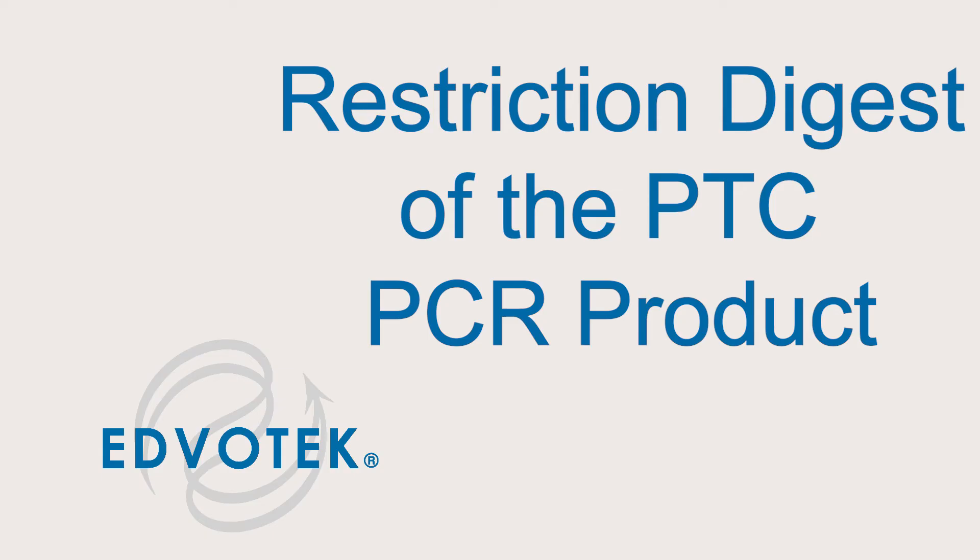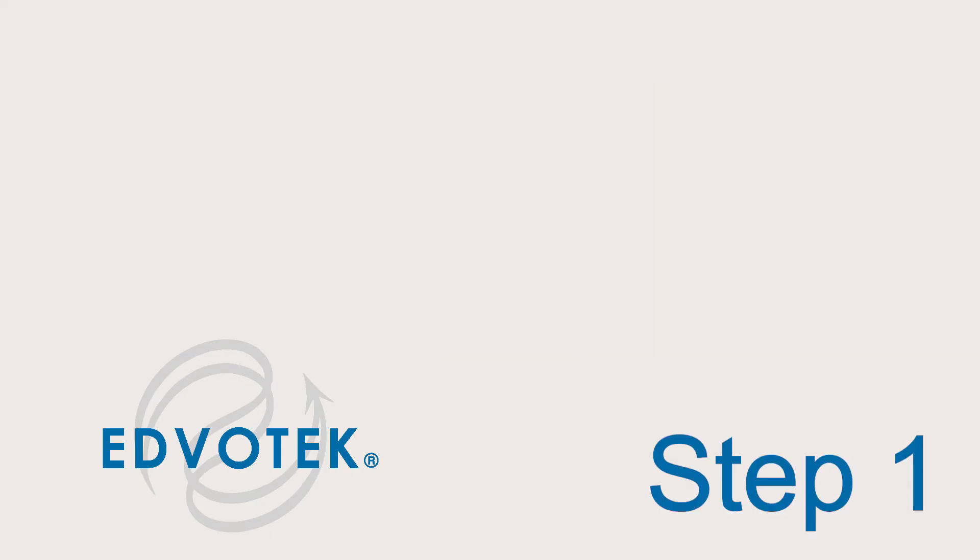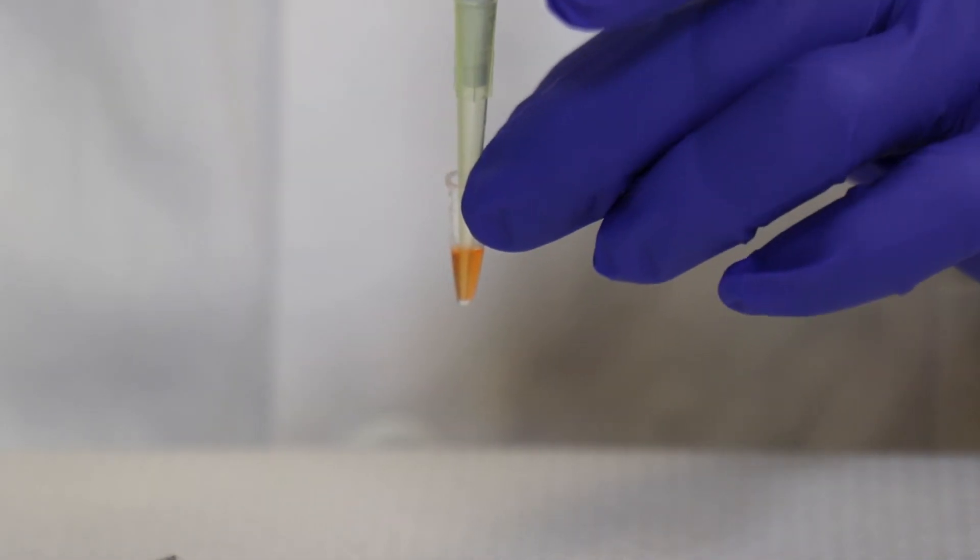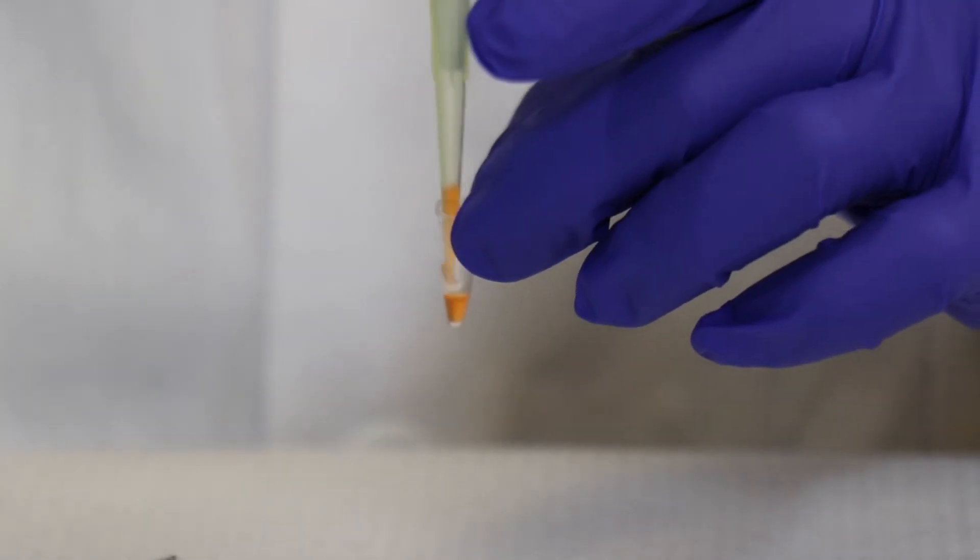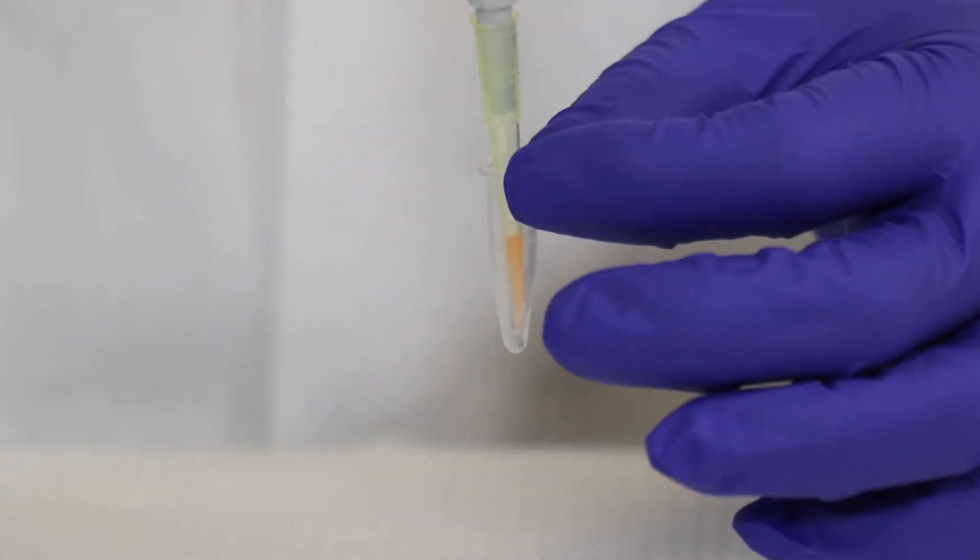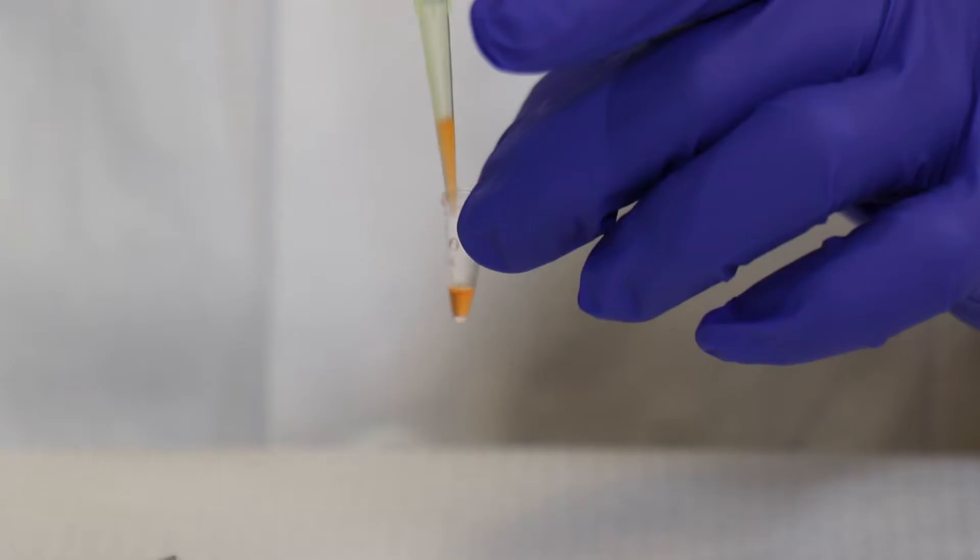Module 3: Restriction Digest of the PTC PCR Product. Step 1: Add 25 microliters of PCR amplified DNA to the tube containing 5 microliters of Hae3 restriction enzyme. Save the remaining 25 microliters of uncut PCR product to set up as a control later on.